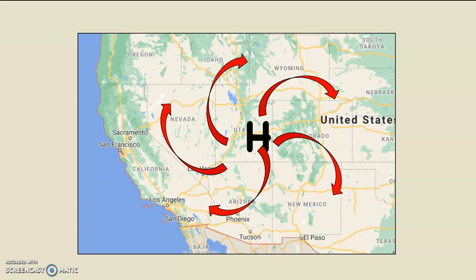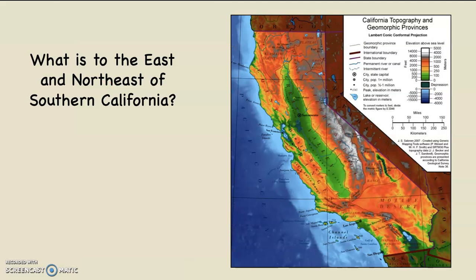Notice where Los Angeles is. Normally, in Southern California and California in general, we are under a westerly flow of air, which means the air comes from the west — and to the west of California is the ocean. However, when high pressure is established over the four corner states, it forces the air into Southern California from the east and northeast — an easterly or northeasterly flow. What is to the east and northeast of Southern California? The Mojave Desert. Desert doesn't always mean hot, but it means dry. This is part of the origination point for the air that flows into Southern California during a Santa Ana event.